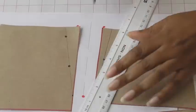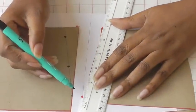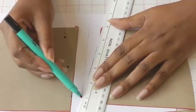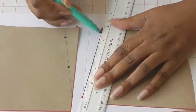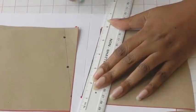So you place your ruler at the point and match to the waistline and draw a line and do the same on the opposite side.